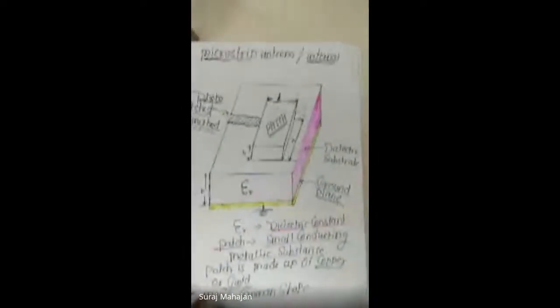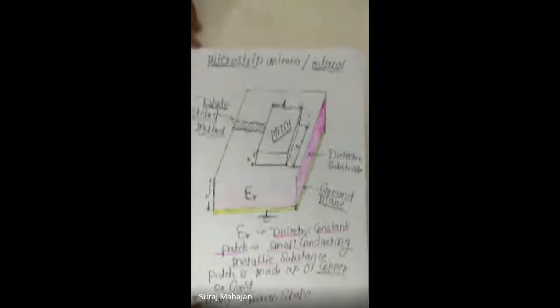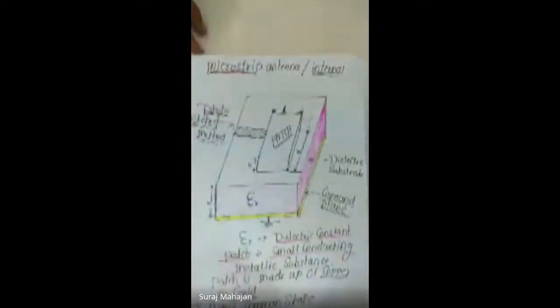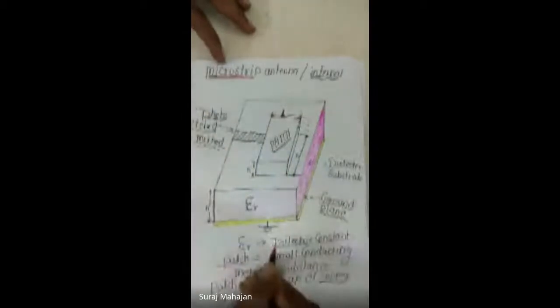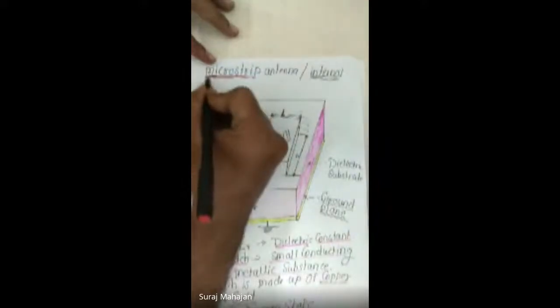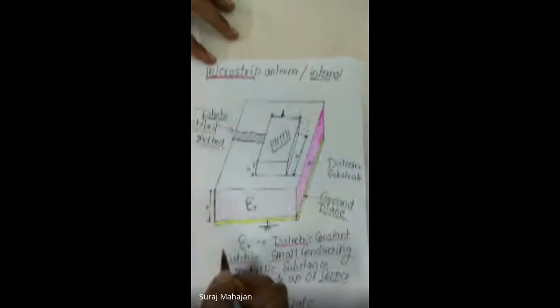The topic for today's lecture is microstrip antenna system. As the name suggests, microstrip means very small in size. This is Unit 4: Microstrip Antenna System. From its name itself you can understand — it is a very small in size antenna system.